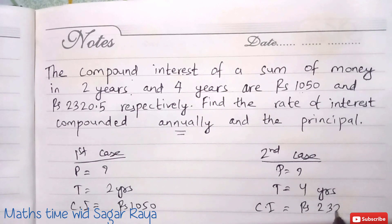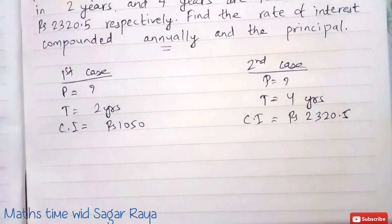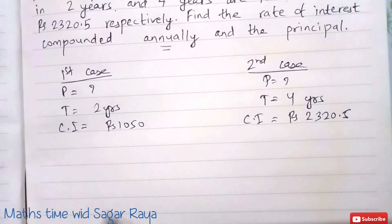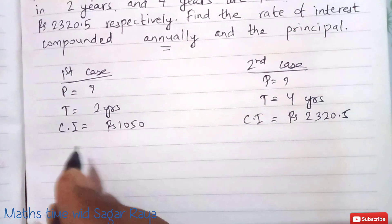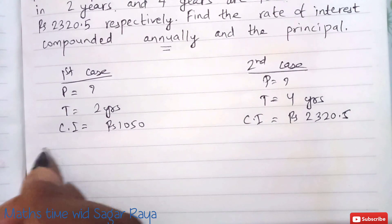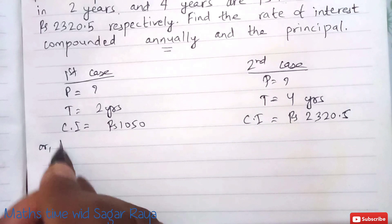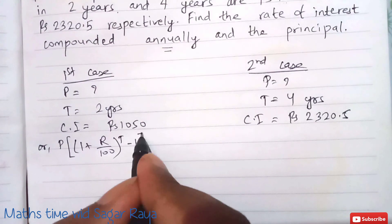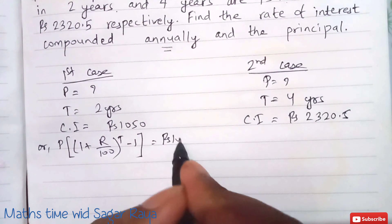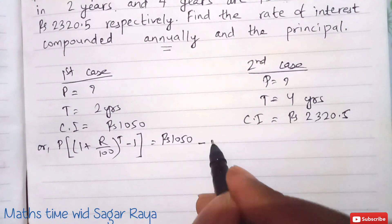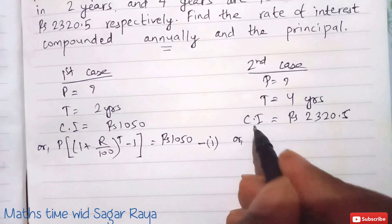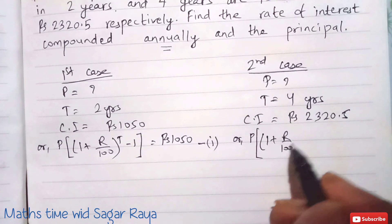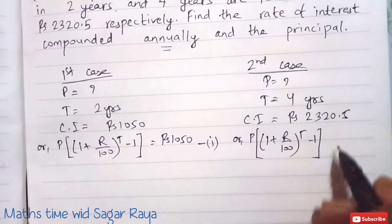Since compound interest is given, we will use the compound interest formula. For the first case, compound interest equals P times (1 plus R by 100) to the power T, minus 1, which equals rupees 1050. Let this be equation 1. Similarly, for the second case, the formula is the same: P times (1 plus R by 100) to the power T, minus 1.